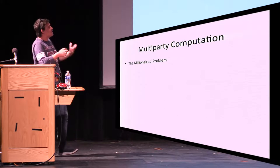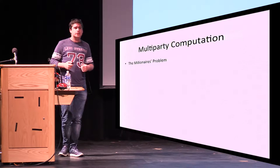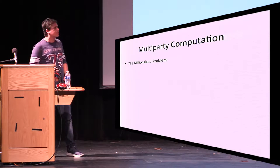So, we call this a hiding property that Bob cannot see the message and the binding property that Alice cannot change the message after she sends the box.